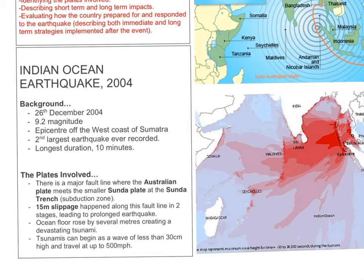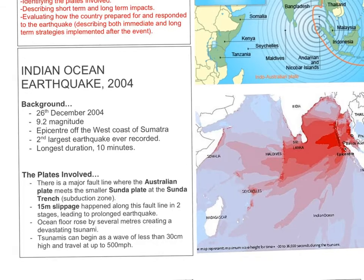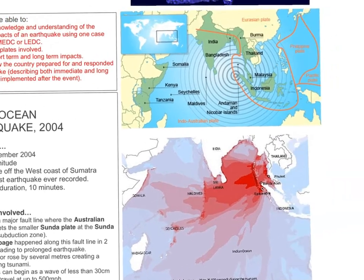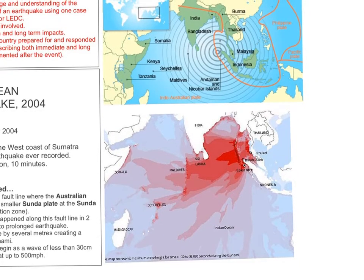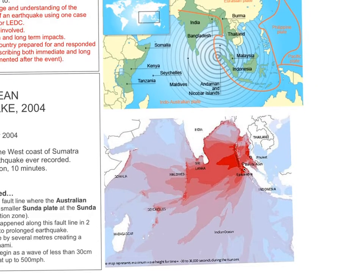In the images to the right-hand side here, you can see the area affected. Sumatra in Indonesia, along with Thailand, received some of the worst damage. But as far west as Somalia, Kenya, Tanzania, and Madagascar, the effects were felt.